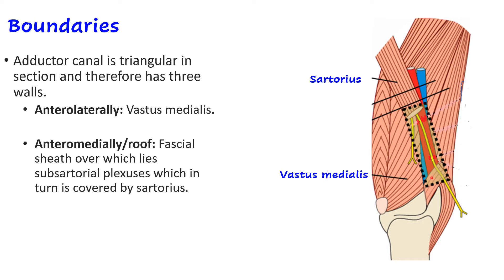Anteromedially — the roof — is formed by the sartorius muscle. Beneath the sartorius muscle lies a plexus of nerves known as the subsartorial plexus, and deep to that is a fascial sheath. So from deep to superficial: the fascial sheath, then the subsartorial plexus, then the sartorius muscle. That is why it is also called the subsartorial canal — because it lies deep to the sartorius muscle.